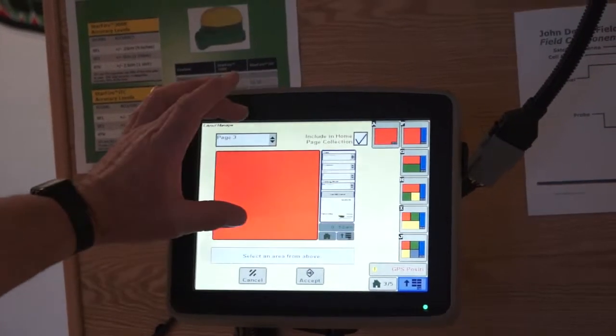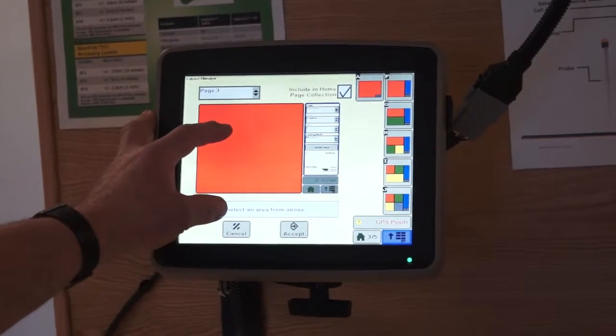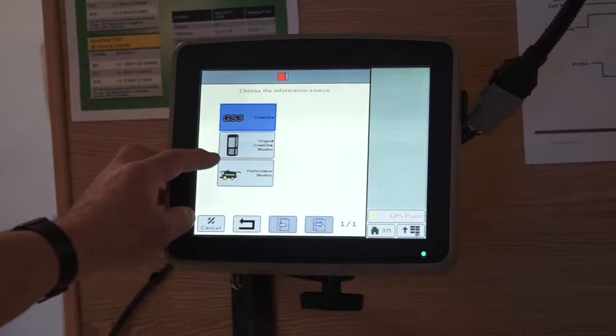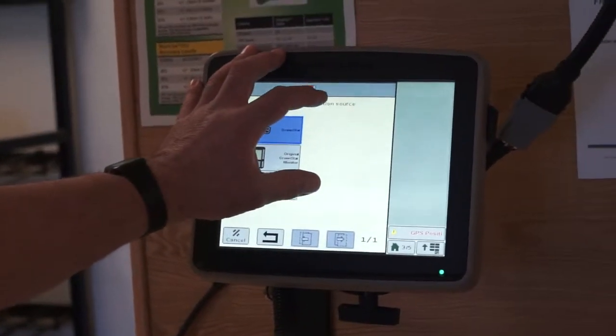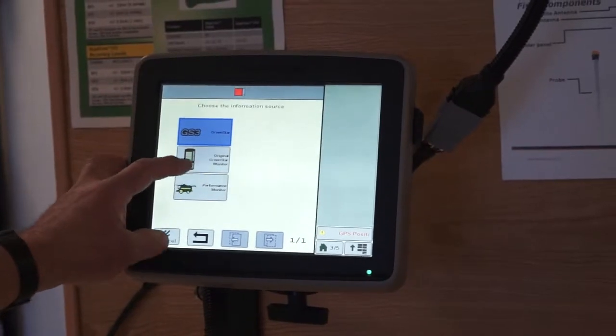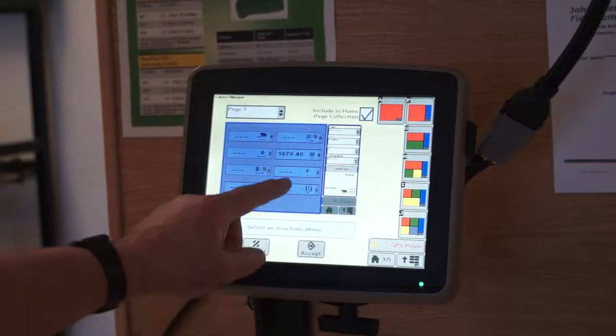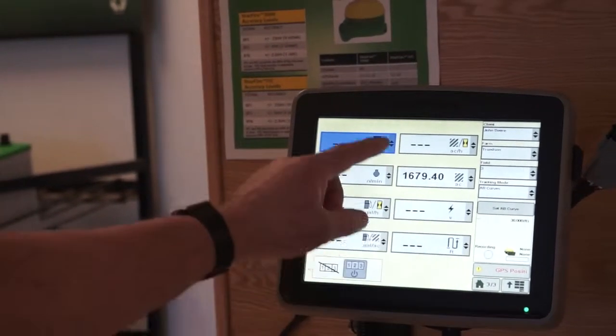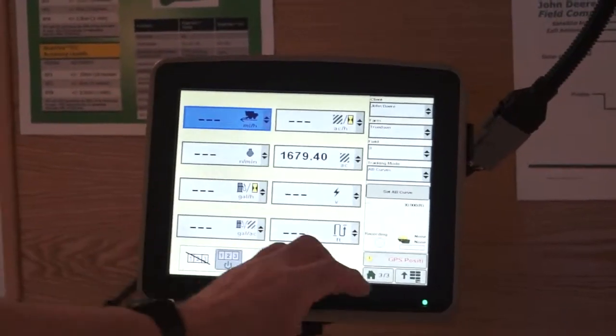If I want to change what is on this screen, say I hooked up to my planter and I want to put it here, just touch the screen there. If I was hooked to a planter or air seeder, it would be available here on the menu. In this case, I'm just going to go to a performance monitor. I have one option there, I touch it. You can see it is now there, I hit accept. Now on page three has my performance monitor. That's how you set up your run pages.